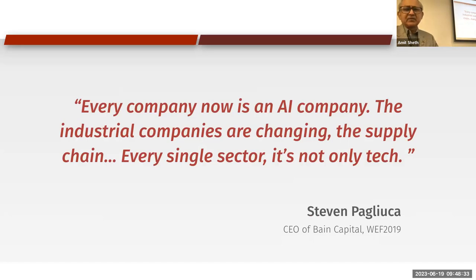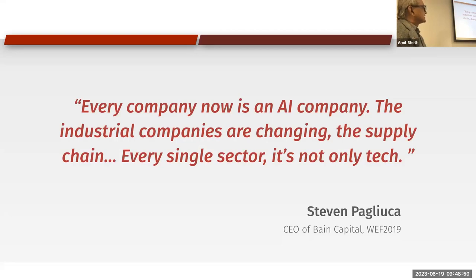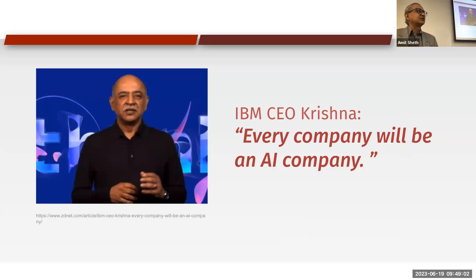At the 2019 World Economic Forum, the CEO of a major capital firm said: 'Every company is now an AI company — industrial companies are changing their supply chains, and every sector, not only tech, is involved.' The CEO of IBM echoed the same sentiment. Every industry is being transformed.